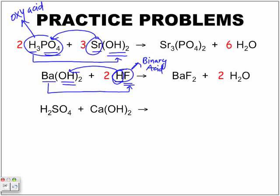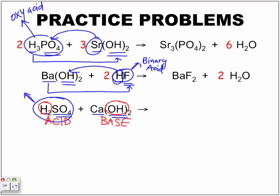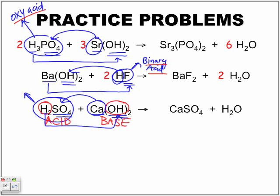Next equation: sulfuric acid and calcium hydroxide. Same thing — metal, non-metal, metal, non-metal. We identify this as a neutralization by identifying our acid and our base. Remember the base contains the hydroxide and the acid contains hydrogen. We're looking at two types of acids — binary acids and oxyacids. This metal combines with this non-metal, and this metal combines with this non-metal. Notice water is formed in all these examples. The equation here is already balanced.